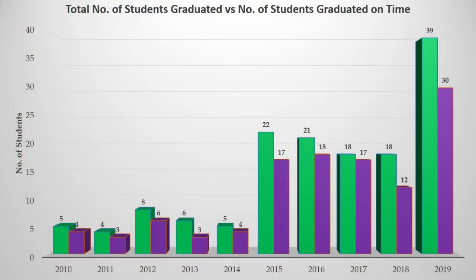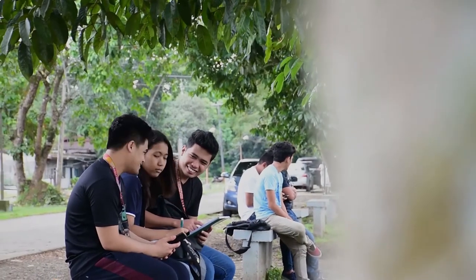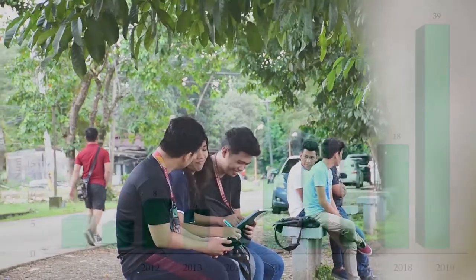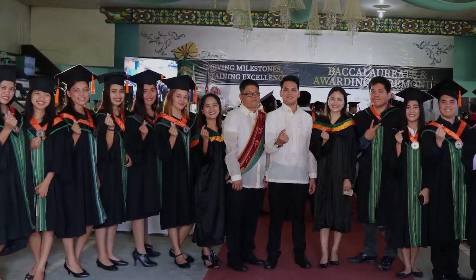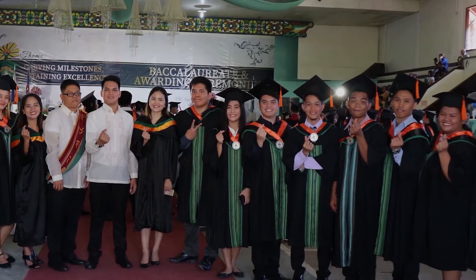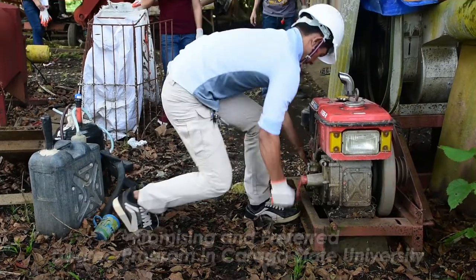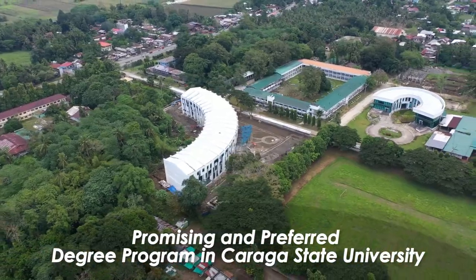The percentages of students who graduated on time were relatively low for 2014 to 2016. However, in 2017, a significant increase to 60% was achieved. Now, the Bachelor of Science in Agricultural and Biosystems Engineering is considered as one of the most promising and preferred degree programs in Caraga State University.